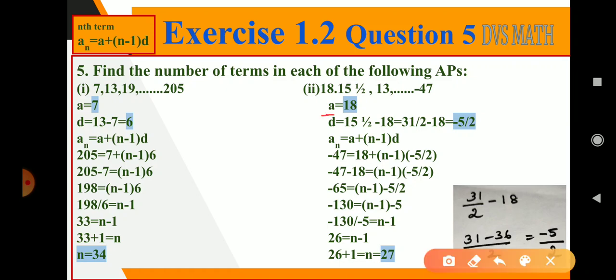Again here, the first term a equals 18. d equals 15 and a half minus 18. As you know, 15 and a half is a mixed fraction, we have to convert that into improper. So 2 into 15 is 30, 30 plus 1, it is 31 by 2. So I wrote 31 by 2 minus 18.